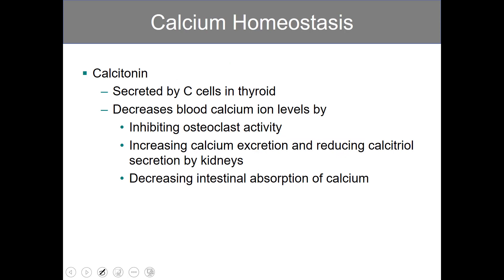Calcitonin, on the other hand, decreases blood calcium levels. It inhibits osteoclasts, slowing them from dissolving the matrix. Calcitonin increases calcium excretion at the kidneys, as well as reducing calcitriol secretion by the kidneys. And lastly, it decreases the absorption of calcium across the digestive lining within the intestines.